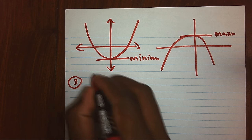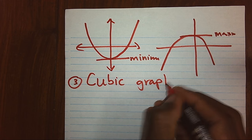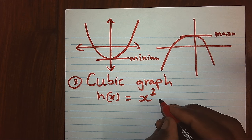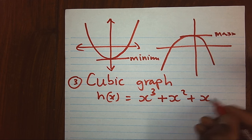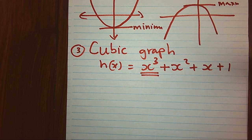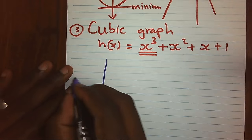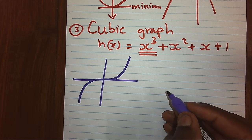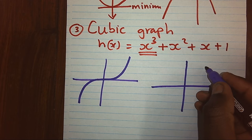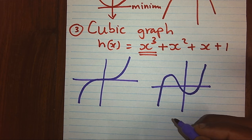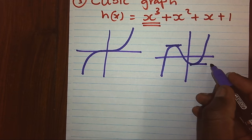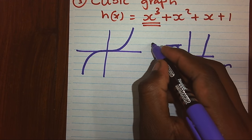We have another type of graph that we call a cubic graph. A cubic graph is given by h of x equals x cubed plus other values that can be there. It could be x squared, it could be x, and a constant value. However, as long as we have x cubed, then this is a cubic graph. A cubic graph can appear like a zigzag, or it can form that turning nature with two turning points. The down one is the minimum, and the up one is the maximum.